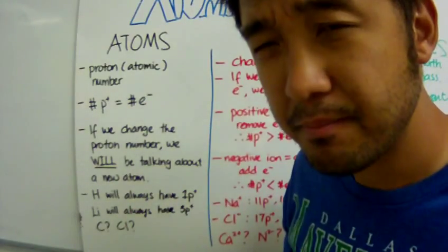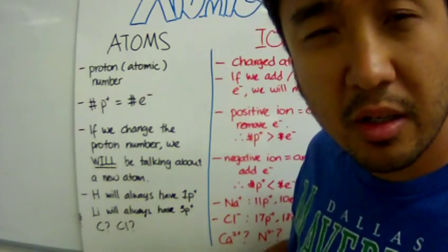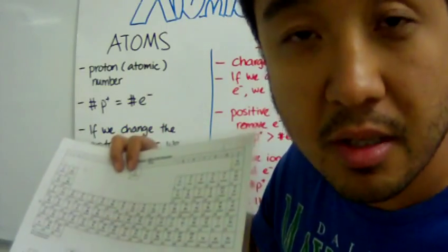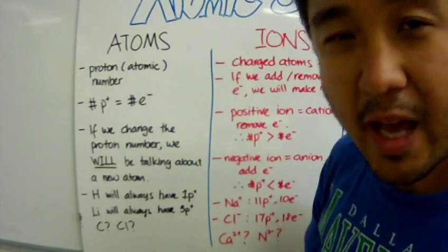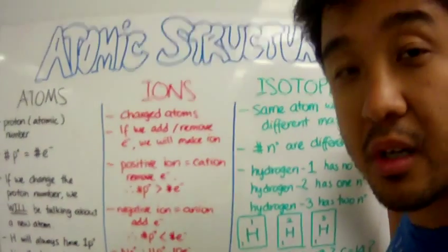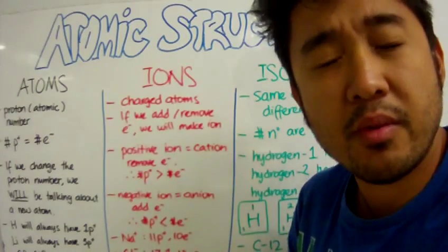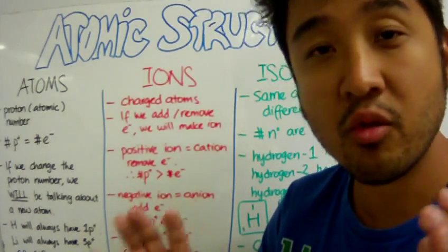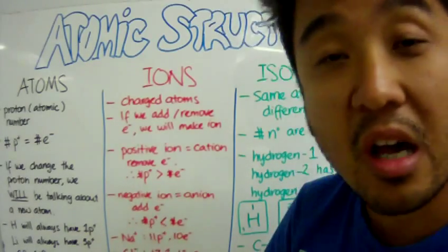What about carbon? Carbon will always have six protons. What about chlorine? Chlorine will always have 17 protons. So far, we've talked about atoms. Atoms are electrically neutral, as we have mentioned before. That means it has the same number of protons and the same number of electrons. It turns out that we can add or remove electrons quite easily, because it doesn't require a lot of energy.